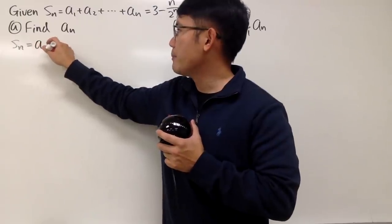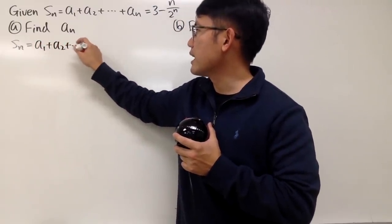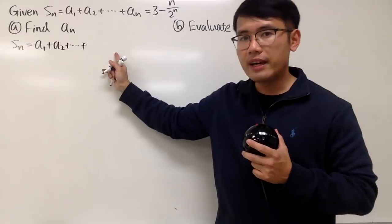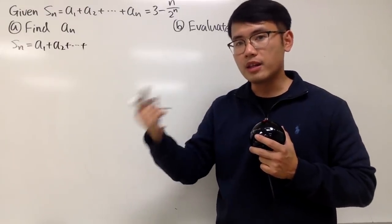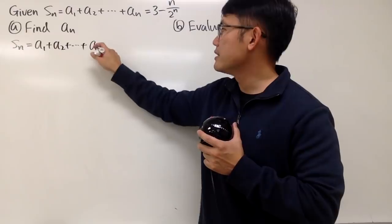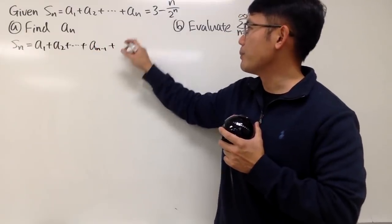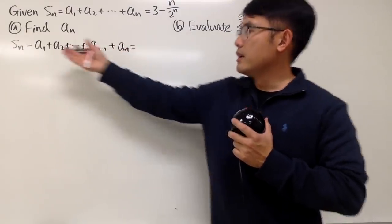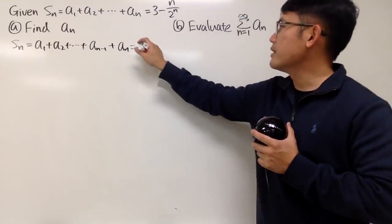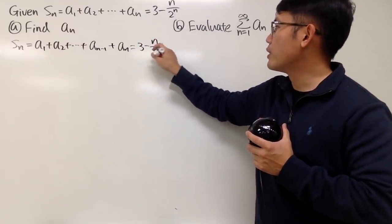$S_n$ is, again, $a_1 + a_2 + \cdots + a_n$. But let me also write down the term before it, namely $a_{n-1}$, and then we will put down the $a_n$. This right here is, of course, still that, $3 - n/2^n$. And now check this out.